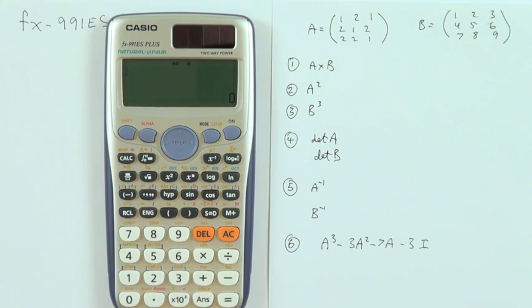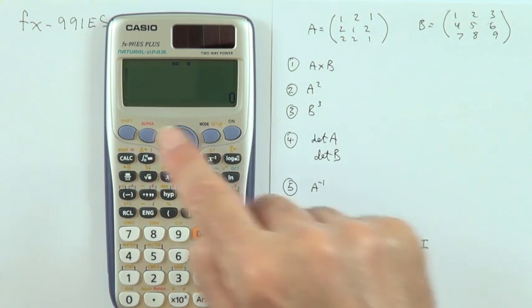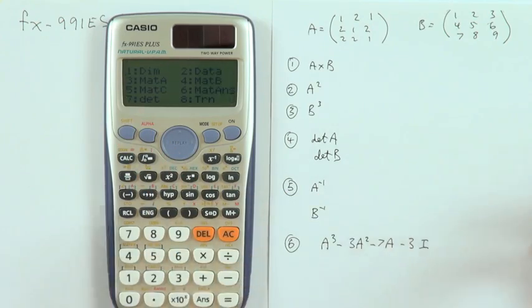If I want to recall matrix A, I do shift matrix to enter the matrix part of it. Matrix A is under number three. I press three. If I press equals, there is. There's matrix A again. Where you go. Call it back if you want. Do the same with B.